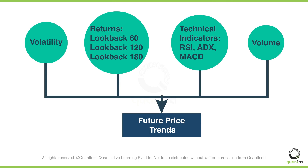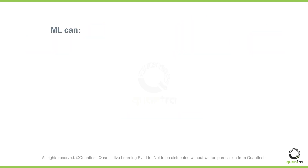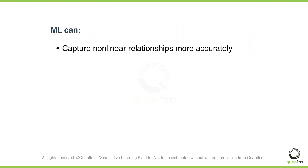This relationship might be difficult for us to interpret. ML, however, can capture not just linear relationships but also non-linear relationships between these variables and future returns more accurately. It can consider the relationship for multiple variables at the same time and then assign weights based on the relevance of each variable.